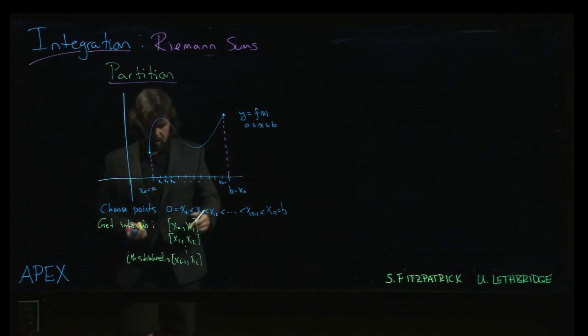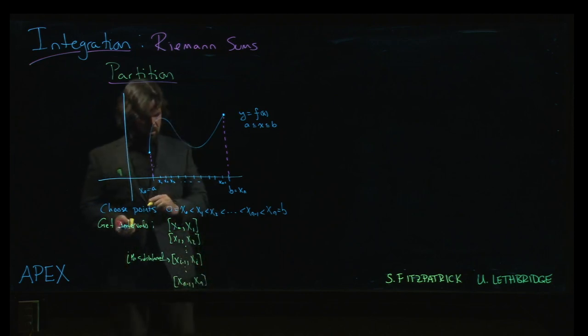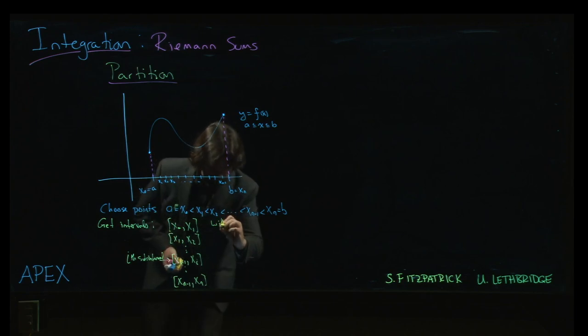Going from xi minus 1 to xi, and so on. The last one would be from xn minus 1 to xn, and these have widths.